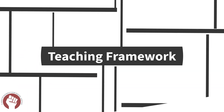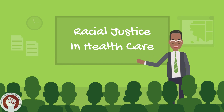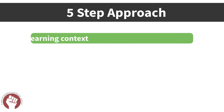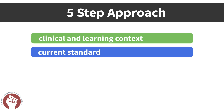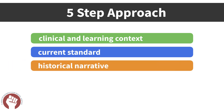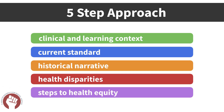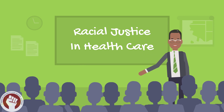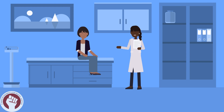The 5-Minute Moment for Racial Justice is a teaching framework to promote health equity and racial justice in medical education. The framework relies on a 5-step approach that discusses the clinical and learning contexts, the current standard of a medical diagnostic or treatment, the historical roots and bias of that standard, contributions to health disparities, and steps to take for health equity. This framework offers educators a structured way to talk about this topic in a concise manner across commonly encountered clinical scenarios.